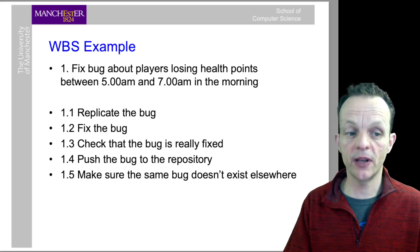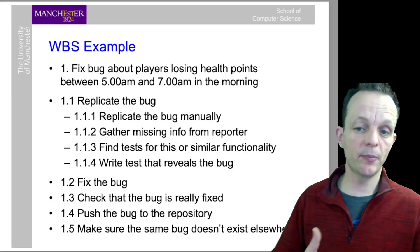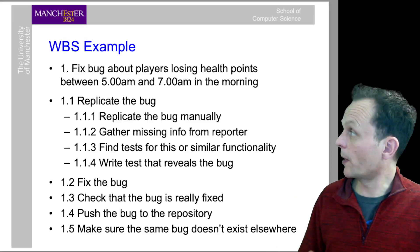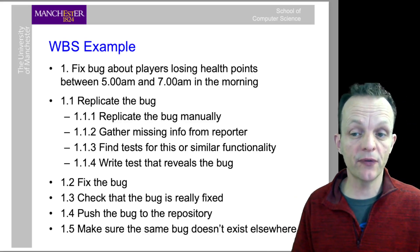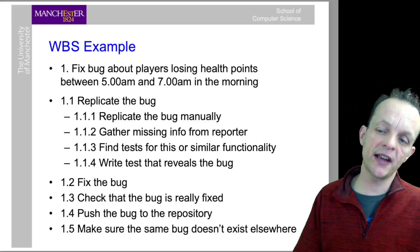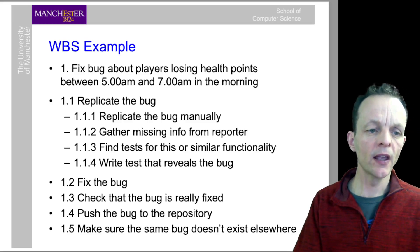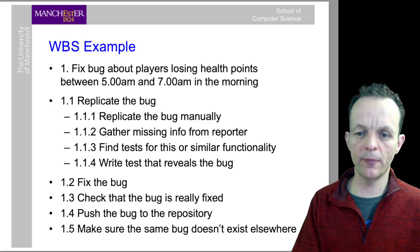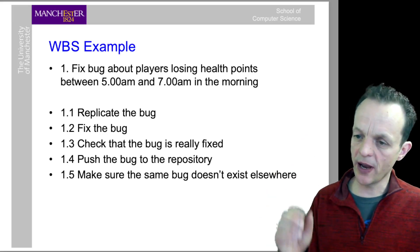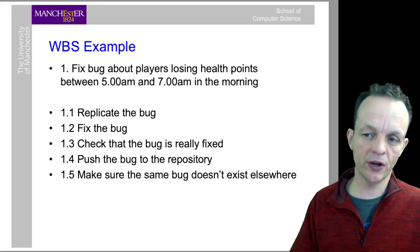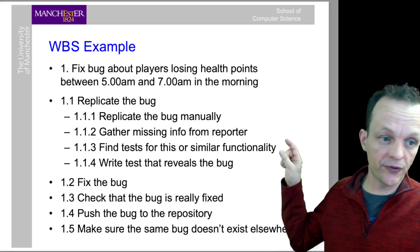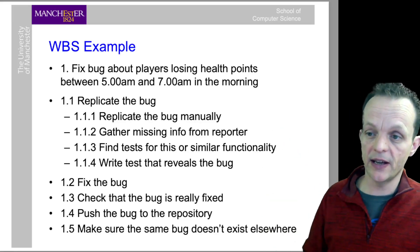We can break each of those steps down even further. For example, replicating the bug - we might replicate it manually, gather missing information from the bug reporter, find tests for similar functionality, and write tests that reveal the bug. The hundred percent rule means if you split evenly with five points, you might have 20% on each, and your total needs to add up to 100%. Within that 20% for replicating the bug, we might break it down further into even smaller percentages.